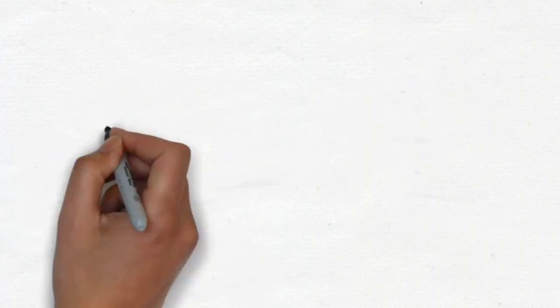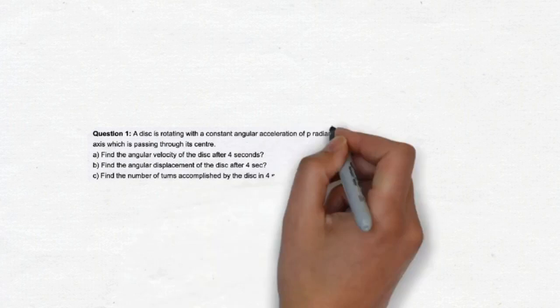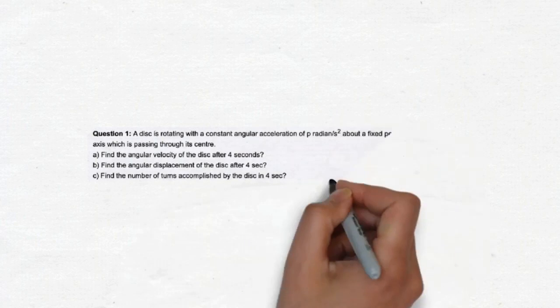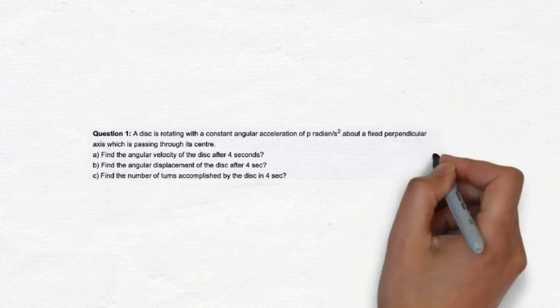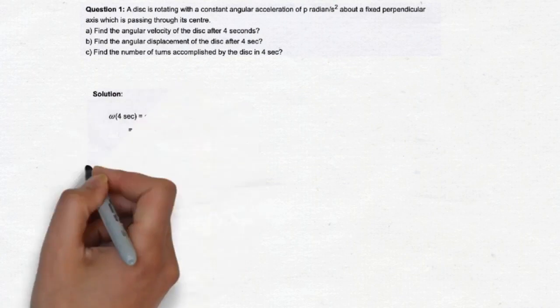The first question is a disk is rotating with a constant angular acceleration of π radian per s squared about a fixed perpendicular axis which is passing through its center. A. Find the angular velocity after 4 seconds. B. Find the angular displacement of the disk after 4 seconds. C. Find the number of turns accomplished by the disk in 4 seconds. Now, let's see the solution.